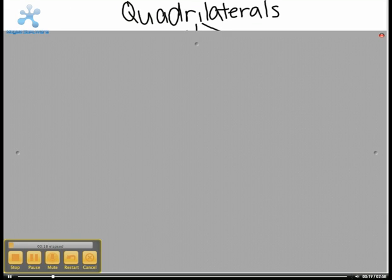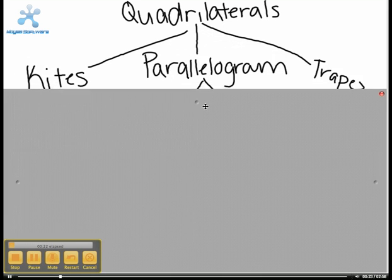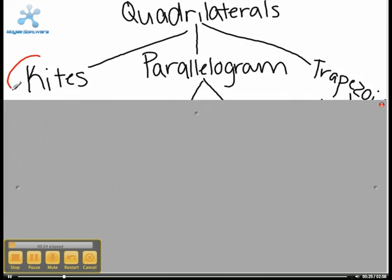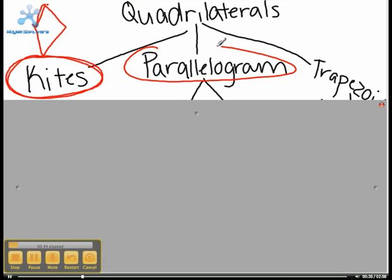Quadrilaterals are four-sided enclosed figures. Kites are quadrilaterals that look like that. Parallelograms have two sets of congruent parallel sides, and they look like that.